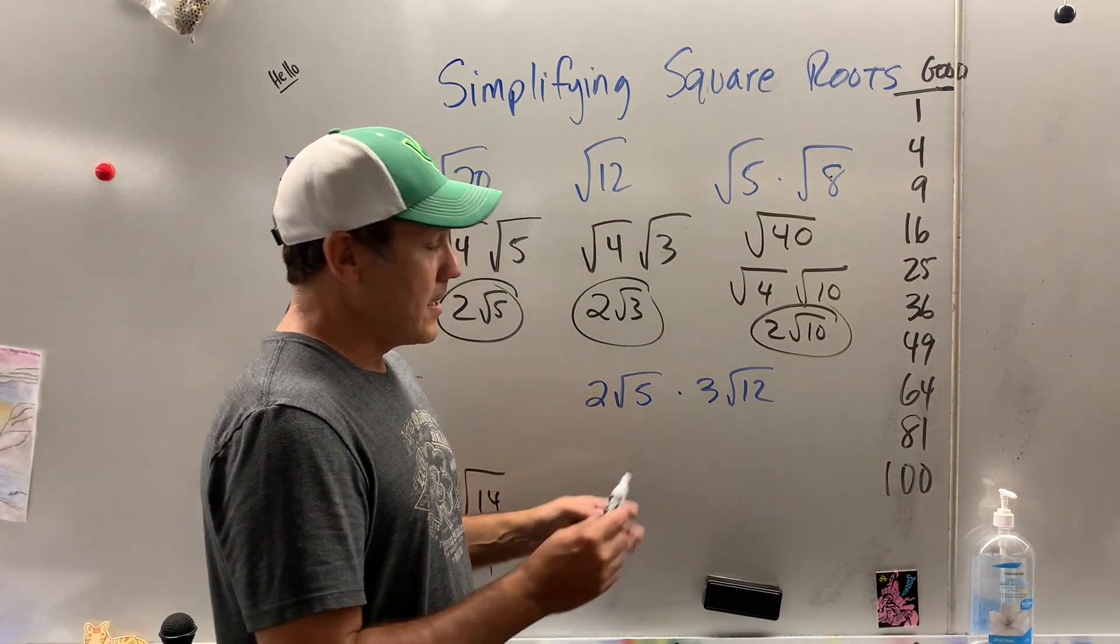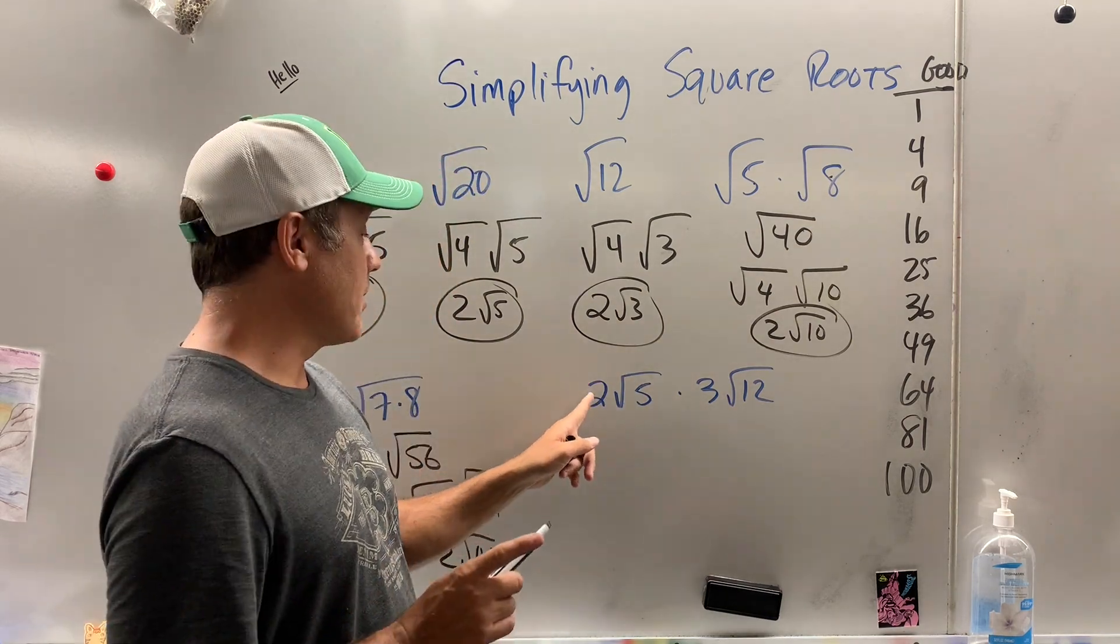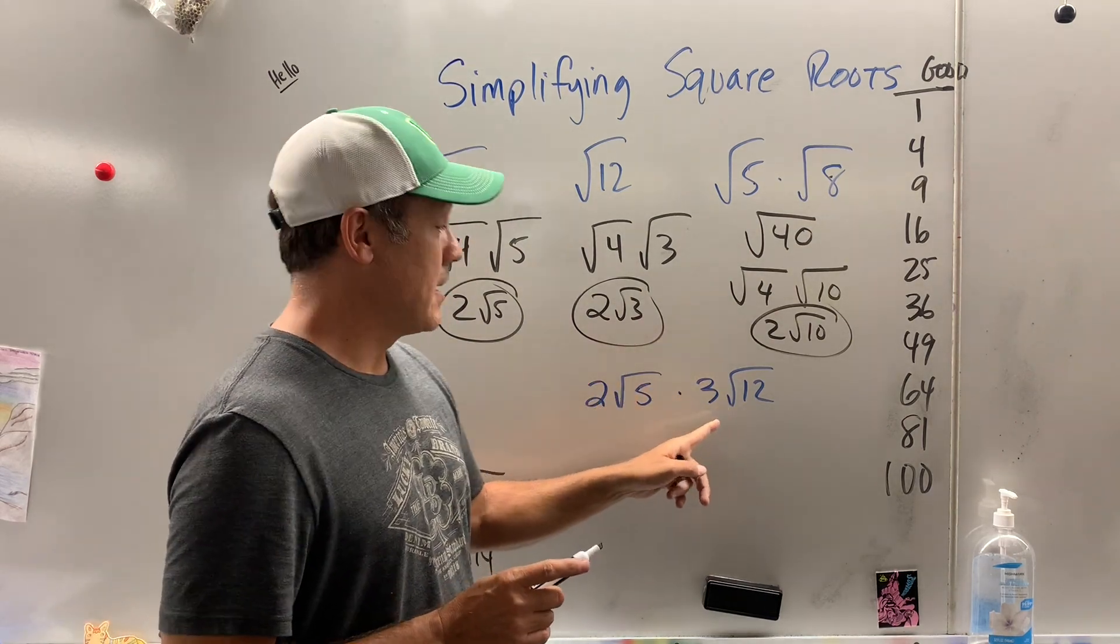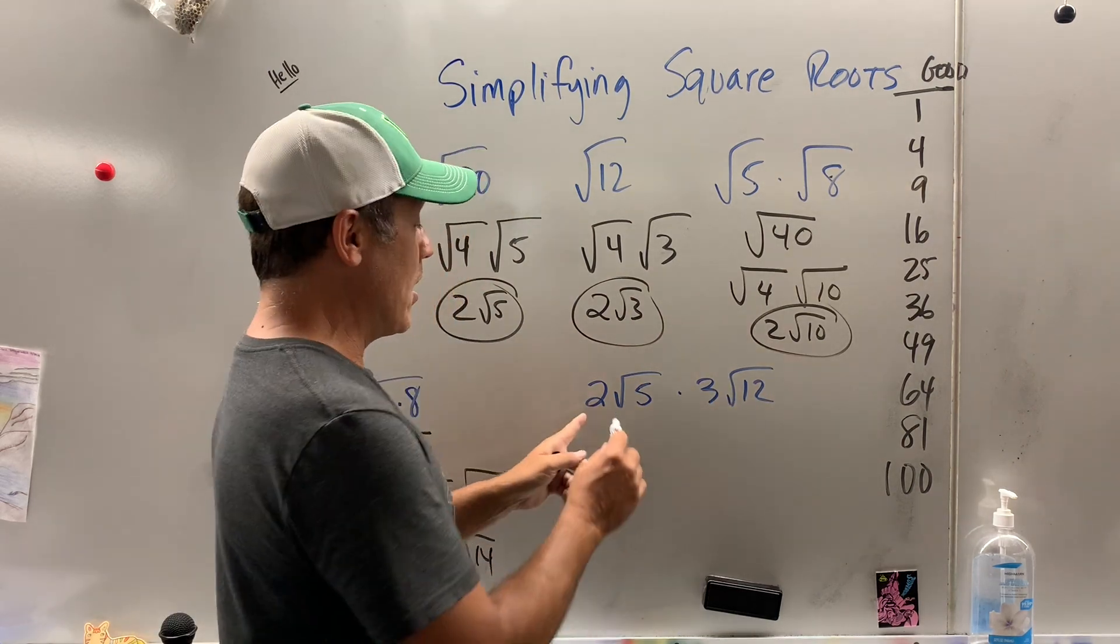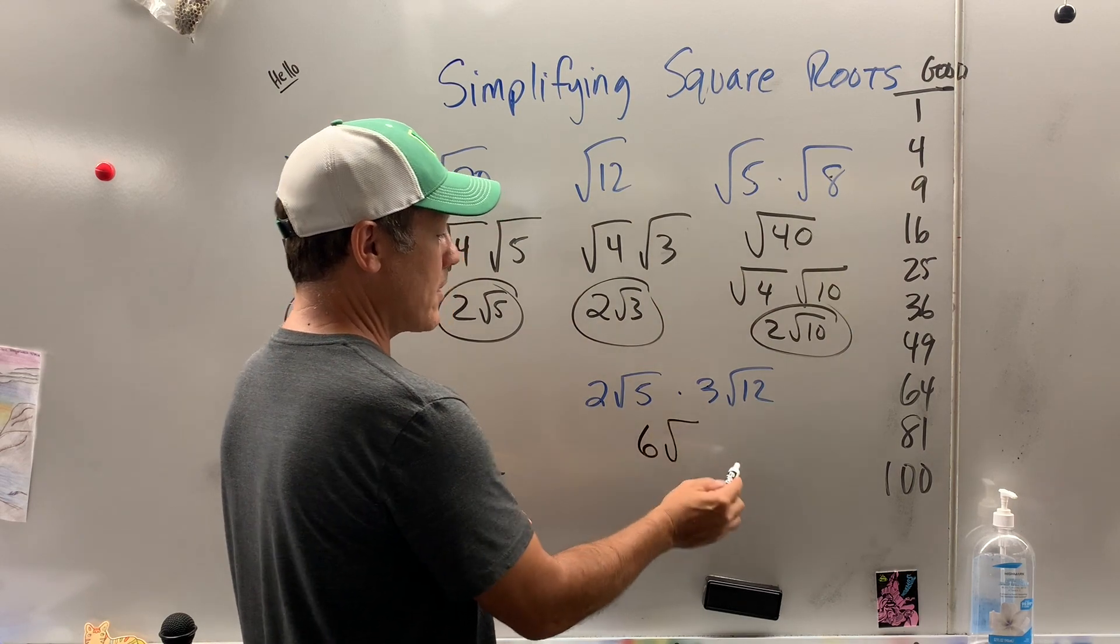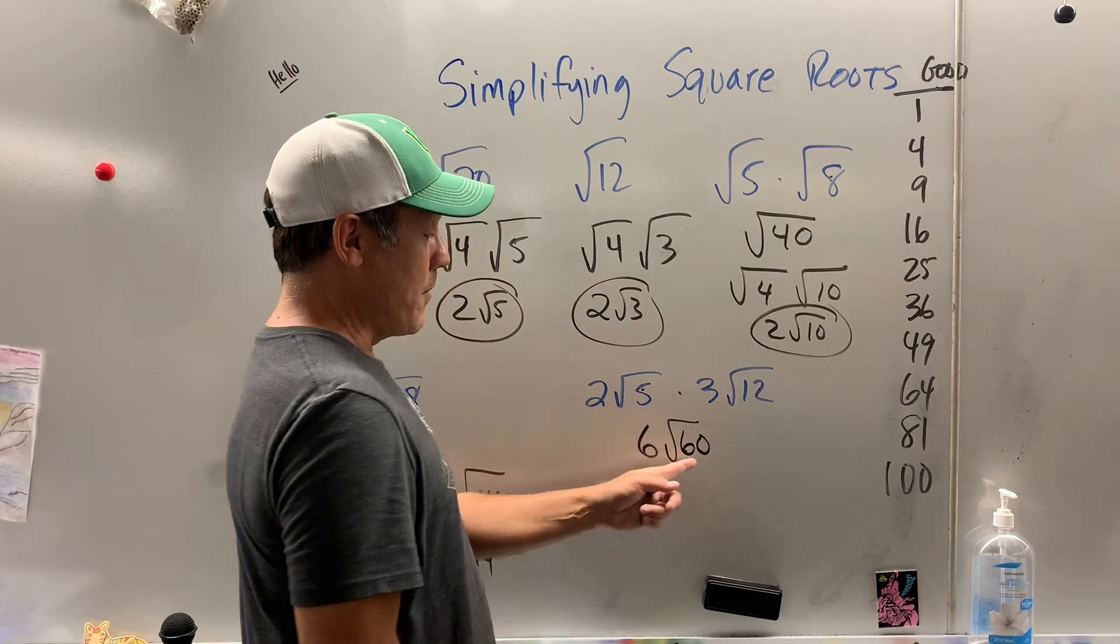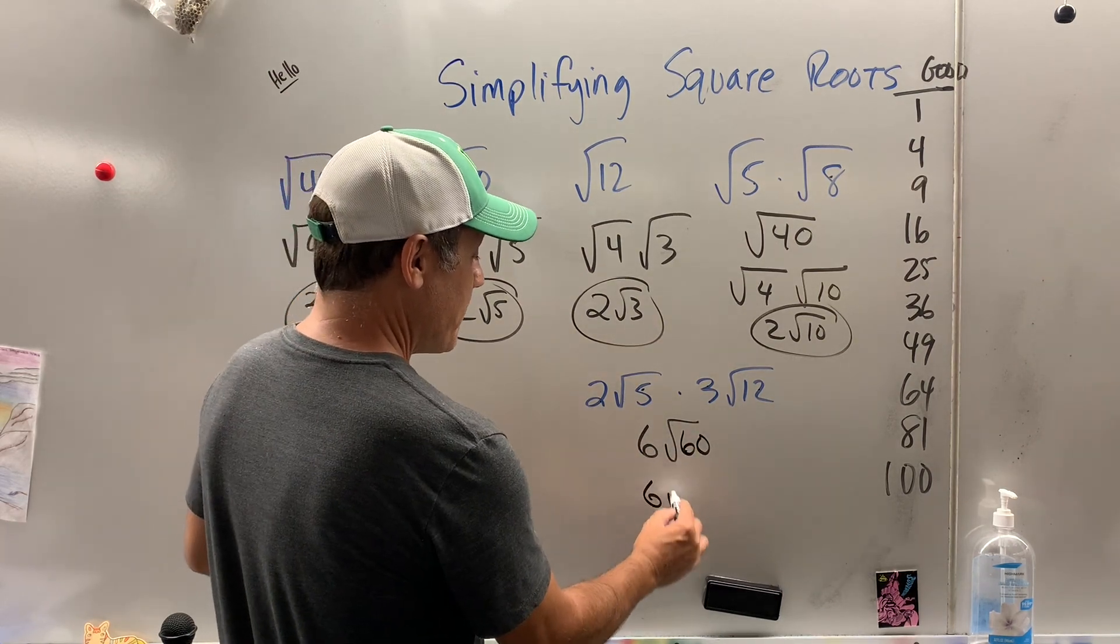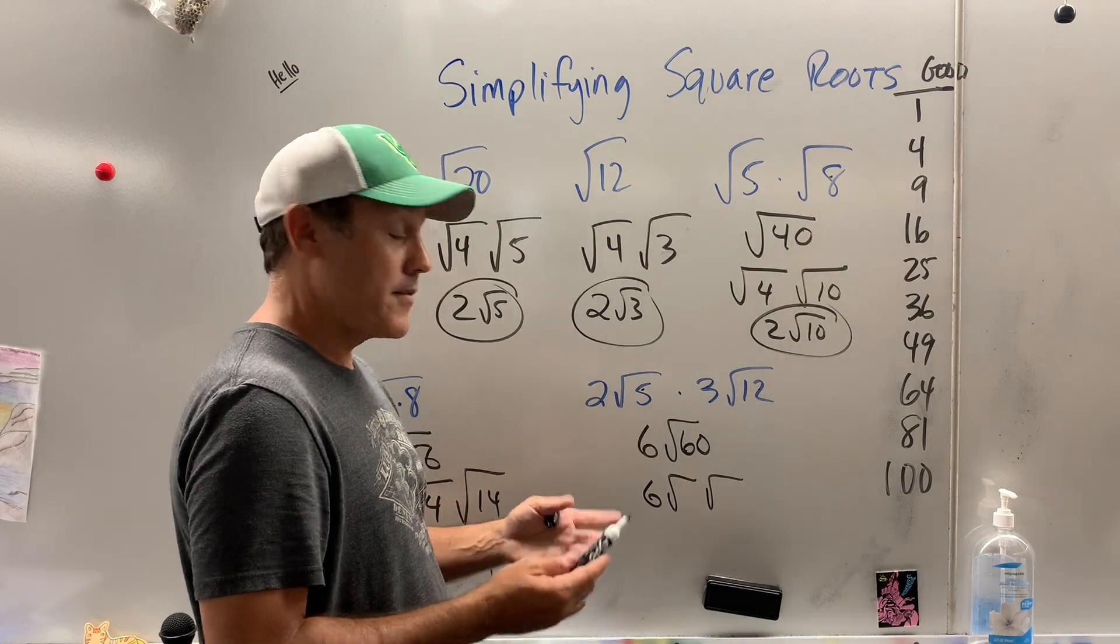Now here, you just can't go multiplying willy-nilly. You can, however, multiply numbers outside radicals, and you can also multiply numbers inside radicals. So what is 2 times 3? 6. Put the radical. What is 5 times 12? 60. Now, we could break this baby down into the good and the bad. Notice how I brought that 6 out. It's part of the answer.